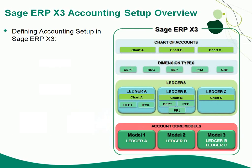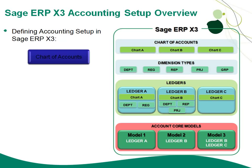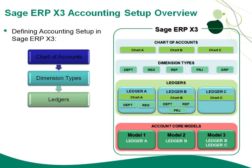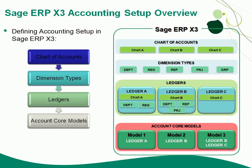In terms of defining the accounting setup in X3, this is where it differs slightly from a traditional ERP system. We need to set up the names for our chart of accounts first, then define our dimension types — which are somewhat like cost centers. Then we define our ledgers, selecting the chart of accounts and potentially the dimension types, putting them together. Then we specify the ledgers within an account core model, and then we'd be ready to define companies and sites.